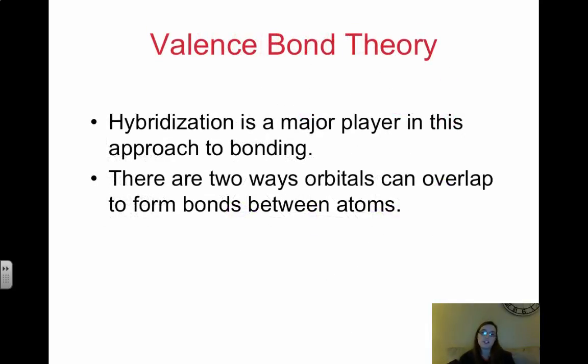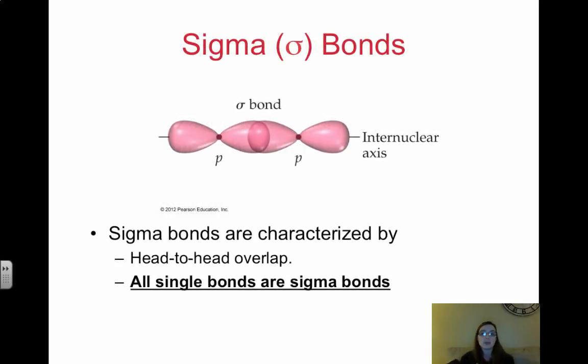So hybridization is a major role player in our approach to bonding. So there are actually 2 ways the orbitals can overlap to form bonds between the atoms. And these are bonds that you're familiar with, but now we're just going to focus on the overlap instead of just focusing on the bond itself. So the first is a sigma bond. A sigma bond is characterized by a head-to-head overlap. So they come together to get, they come together head-to-head. So a sigma bond comes together head-to-head. And all single bonds are sigma bonds. This is so important. All single bonds are sigma bonds.